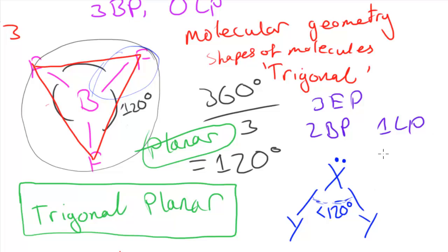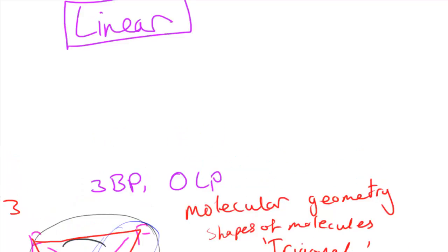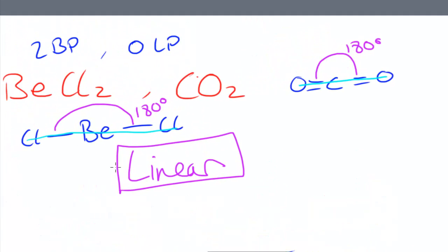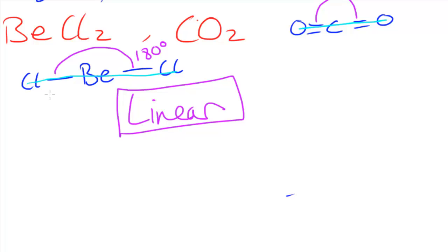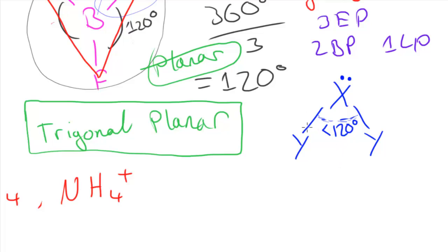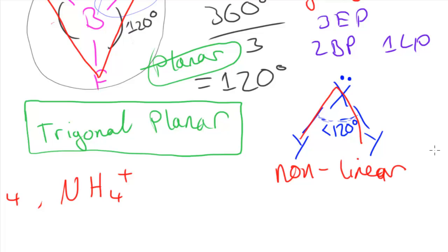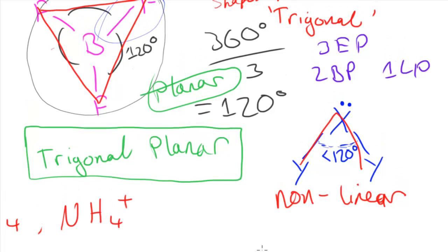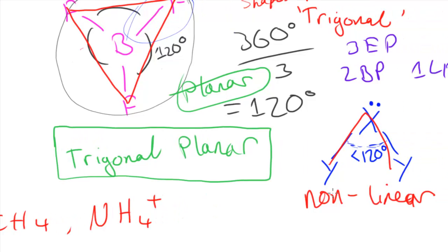So this angle is less than 120 degrees — not exactly 120, but slightly less because of this lone pair. The shape of this molecule is in one plane, and it's similar to a structure where one atom is bonded to two atoms. But the problem is that it's bent and not in a line — it's like a little bendy upside-down V. So the name we give this is non-linear.